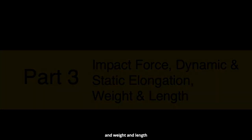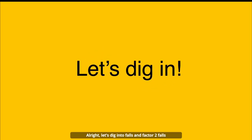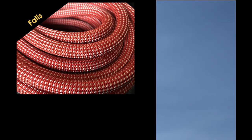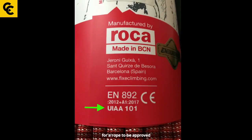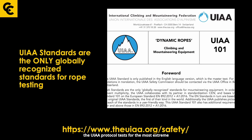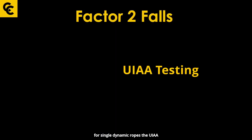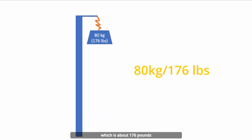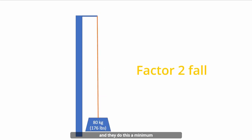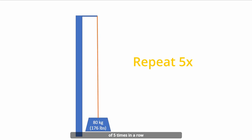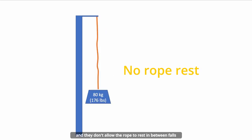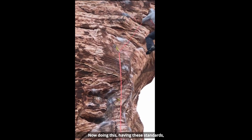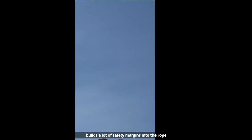Let's dig into falls and factor two falls. The UIAA has specific tests and criteria for a rope to be approved. The UIAA protocol tests for the most extreme form of a fall, which is called the factor two fall. For single dynamic ropes, the UIAA test drops an 80 kilogram weight — about 176 pounds — for a factor two fall, and they do this a minimum of five times in a row without allowing the rope to rest between falls. Having these standards builds a lot of safety margins into the rope.